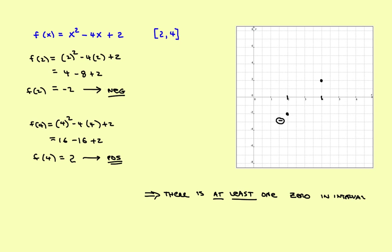There's got to be at least one zero in the interval. If you were to actually graph this, it goes something like this, and sure enough, there is a zero right here. So in this example, you had a continuous function, evaluated at the left and right endpoints, got opposite signs — one negative, one positive — so you can conclude there is at least one zero in the interval. This is a case where the intermediate value theorem worked just fine. There might be more than one, but there's at least one zero in there.